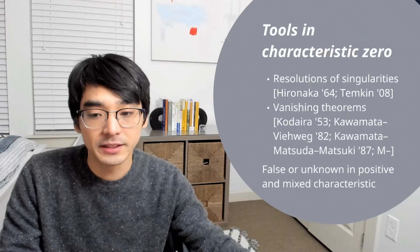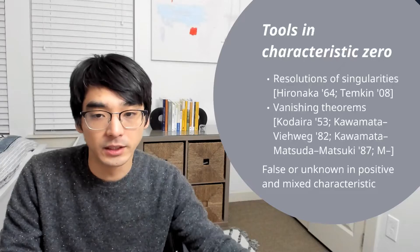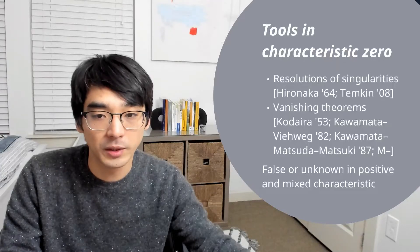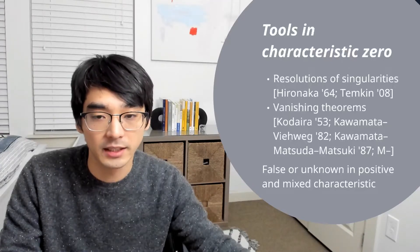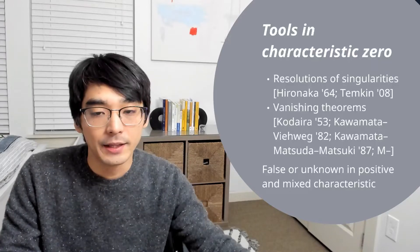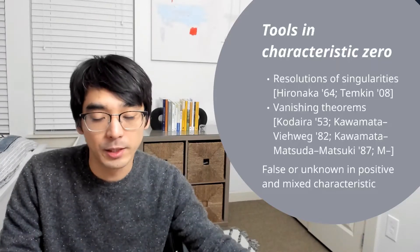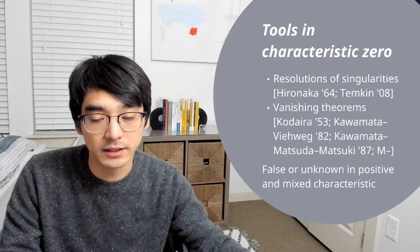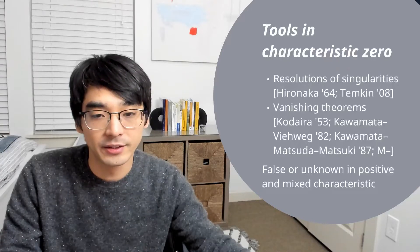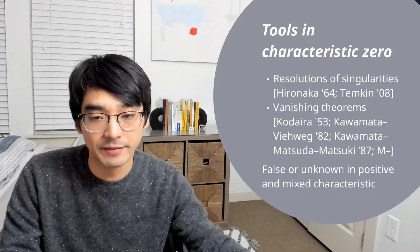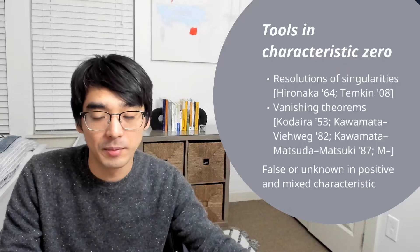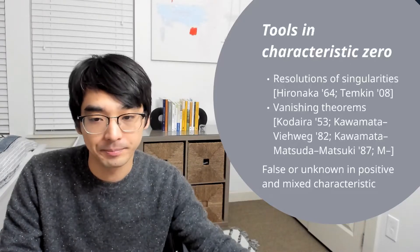Over the complex numbers, there are two very important tools that we use. The first one is resolutions of singularities — this was proved by Hironaka in 1964. The other one is vanishing theorems. There are many vanishing theorems, but the one I have in mind is due to Kodaira in 1953, and was further generalized by Kawamata-Viehweg in 1982 and Kawamata-Matsuda-Matsuki in 1987, among other people.